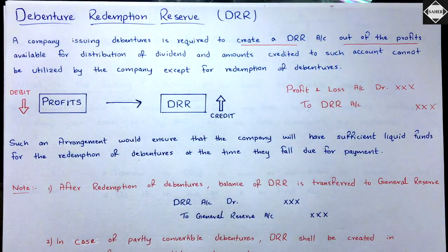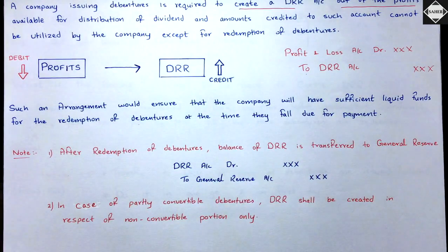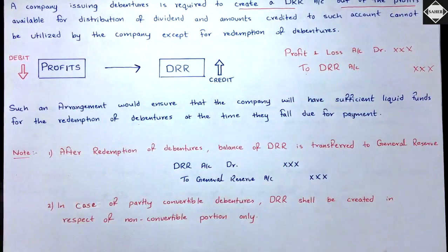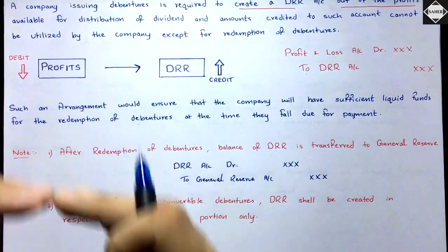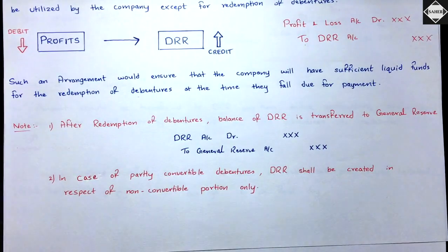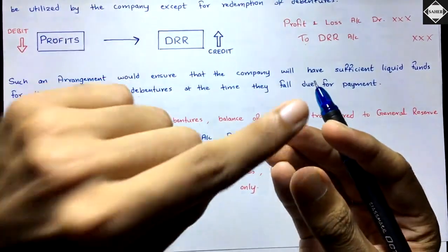After redemption of debentures, the balance of DRR is transferred to General Reserve. The entry is: DRR Account debit, General Reserve Account credit — you are removing the money from DRR and transferring it to General Reserve. In the case of partly convertible debentures, DRR shall be created only in respect of the non-convertible portion, since the convertible portion will be converted into equity shares with no cash involved.